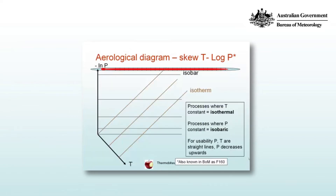The aerological diagram that we use mostly in the Bureau is the Skew-T Log-P diagram, otherwise known in the Bureau as the F160 — it's simply the number of the form. The vertical axis is the minus logarithm of pressure, so pressure is displayed as a logarithm decreasing upwards. The temperature lines, the isotherms, are skewed at 45 degrees so that we can distinguish those from the dry adiabats and the saturated adiabats. A process where temperature is constant is isothermal; a process where pressure is constant is isobaric — remembering that bar is a unit of pressure. For usability, the isobars and the isotherms on this diagram are straight lines.